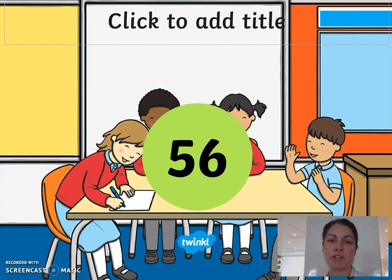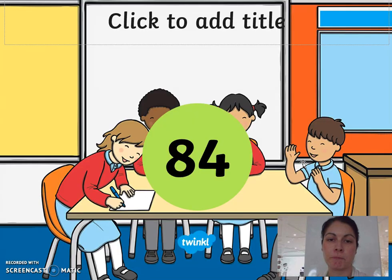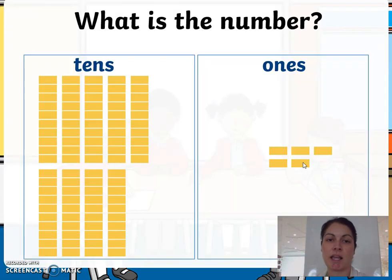The next slide we have lots of tens. We have to count these up, so again we count: one ten, two tens, three tens, four tens, five tens, six tens, seven tens, eight tens. So eight tens is equal to eighty. Then we count our ones: one, two, three, four. So eighty plus four equals eighty-four.